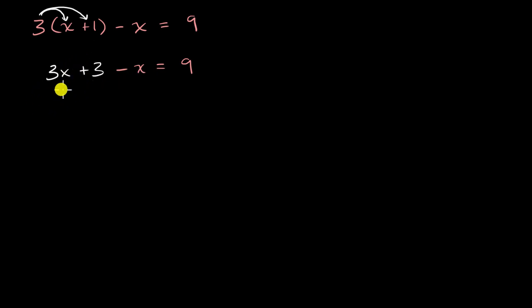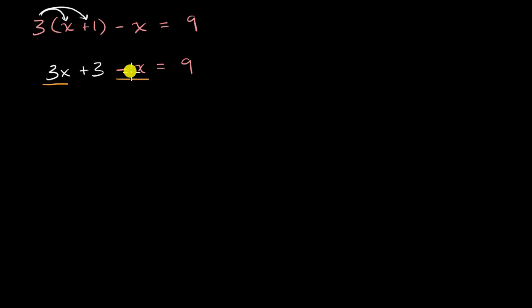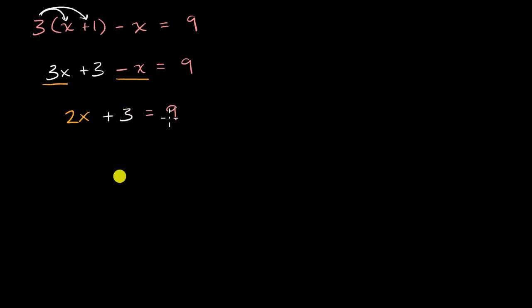The next thing we could do is simplify the left-hand side. I have three x's here and then I want to take away an x. So if I have three x's and then I take away an x, how many x's do I have? Then I have two x's, and then I still have that plus three — so two x plus three is equal to nine.